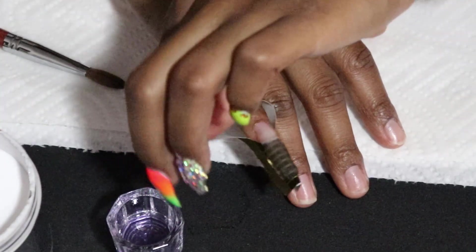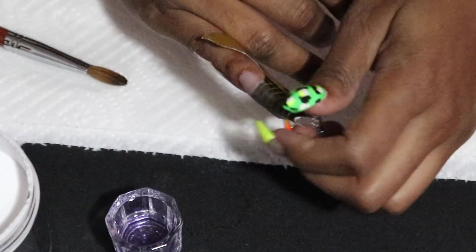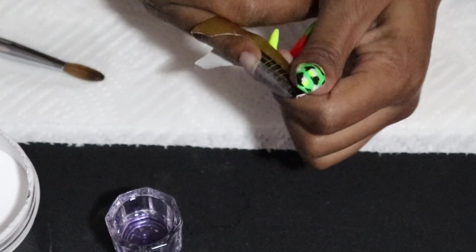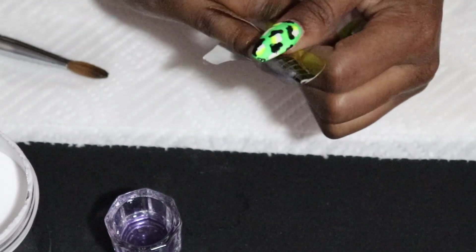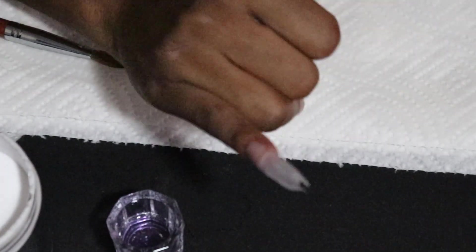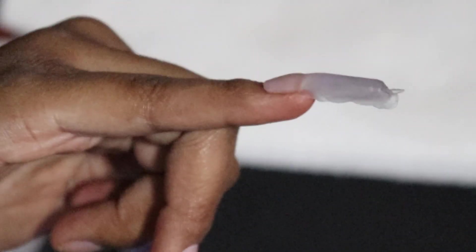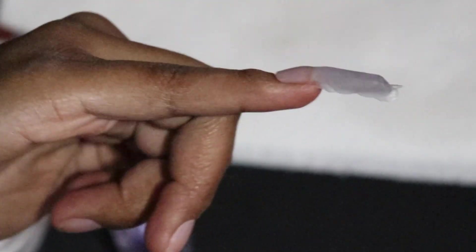Now that the nail is done, I'm just going to gently remove the nail form. It's pretty easy—it's just a pinch and pull. And now we can see that I have a formed nail. It's going to need a lot of filing, but there it is.